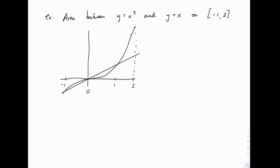If we didn't notice that, if we just charged ahead and wrote down the integral from negative 1 to 2, and then wrote one minus the other, we would miss that picture.